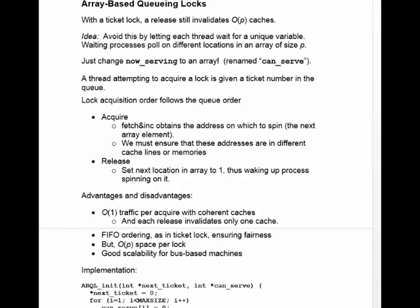In the last video, we saw that ticket-based locks fixed the fairness problem, but we still have the problem of traffic. A release still invalidates other processors' caches.